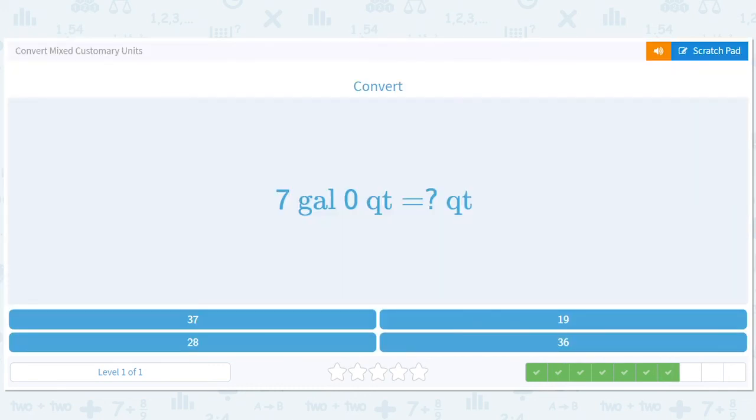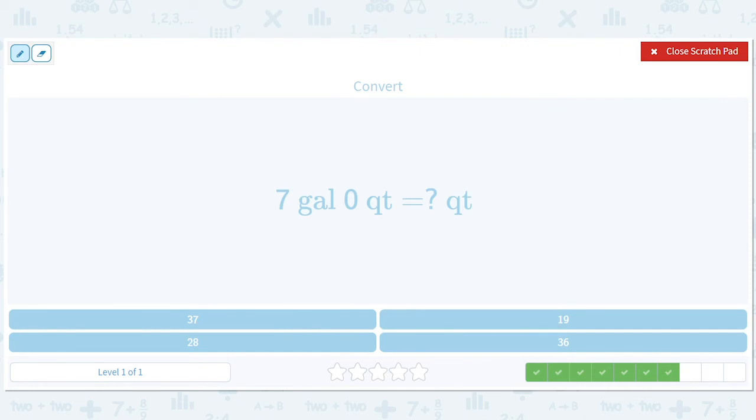Seven gallons and zero quarts equals how many quarts? Well, again, there are four quarts in a gallon. So it's just seven times four equals 28.